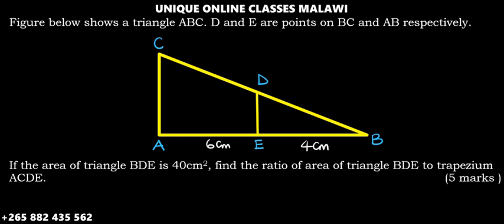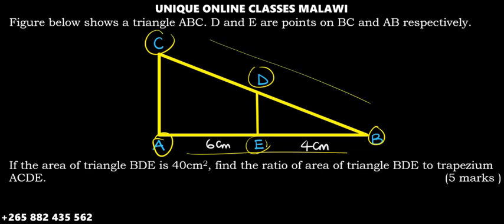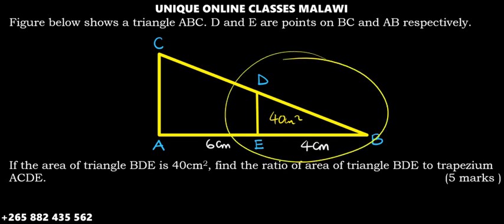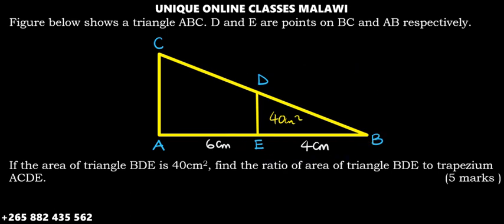Let's see the solution of this problem. The question shows a triangle ABC — a bigger triangle A, B, and C where D and E are points on BC and AB respectively. The area of triangle BDE is 40 centimeters square. We need to find the area of triangle ACDE.